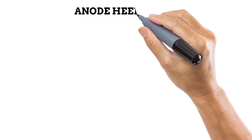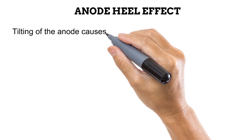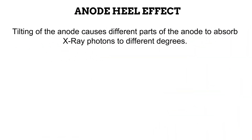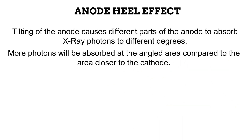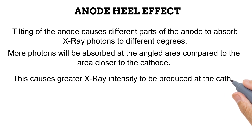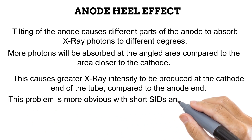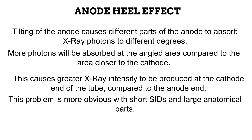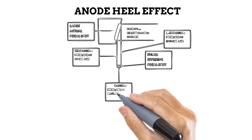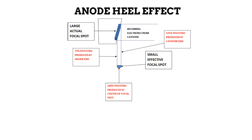However, tilting the anode target will cause some of its parts to absorb produced X-ray photons. Most of this absorption occurs at the area that is slanted away, compared to the area that is still close to the cathode. Because less photons are absorbed at the area near the cathode, more X-ray photons are produced at the cathode end of the tube compared to the anode end. This problem is known as the anode heel effect, and is more obvious when large anatomical parts are imaged with short source image distance. Due to the anode heel effect, for every 100 photons present at the center of the focal spot, only 75 are produced at the anode due to greater absorption of photons at that part, and 120 photons are produced at the cathode end due to less absorption of photons at that end.